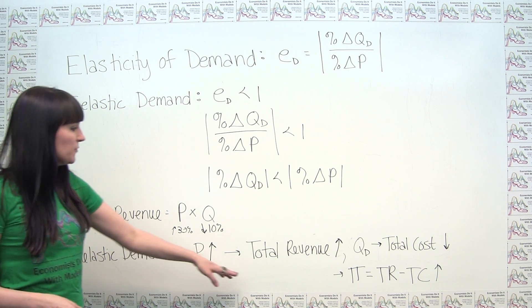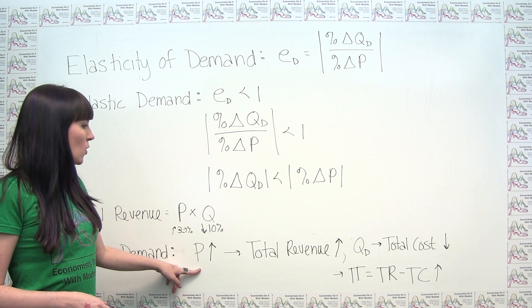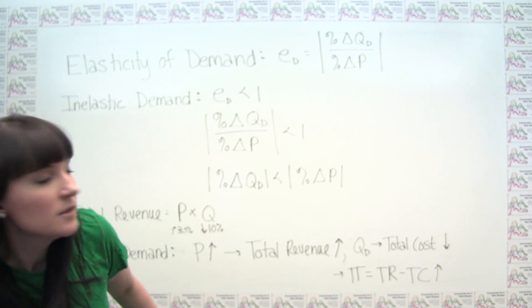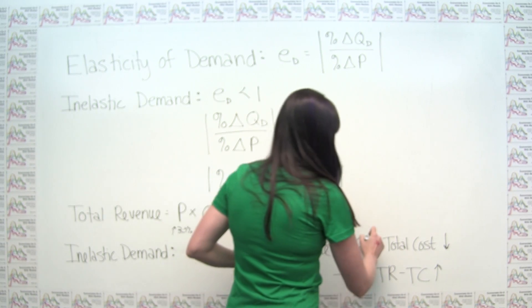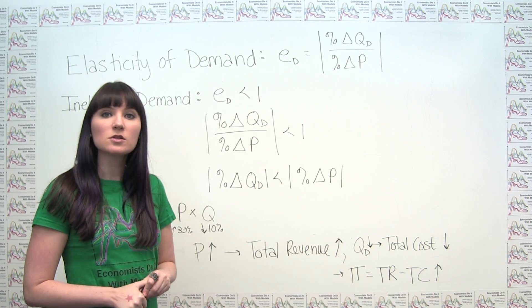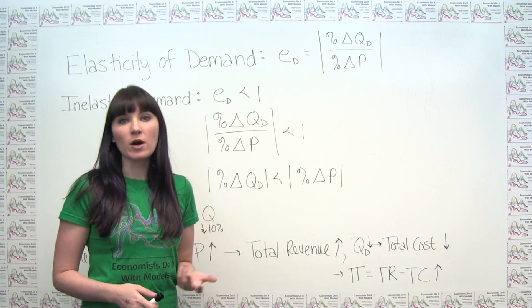So what we see is that if our total revenue is going up because we increased our price, we can also say that our quantity demanded decreased. Because again, demand curves slope downwards, so if we were to raise the price of our product, we would see less of that product being sold.